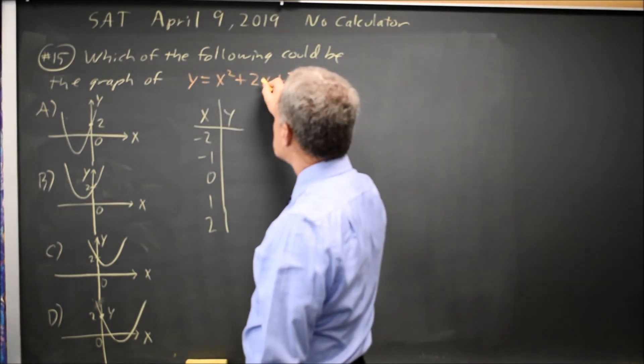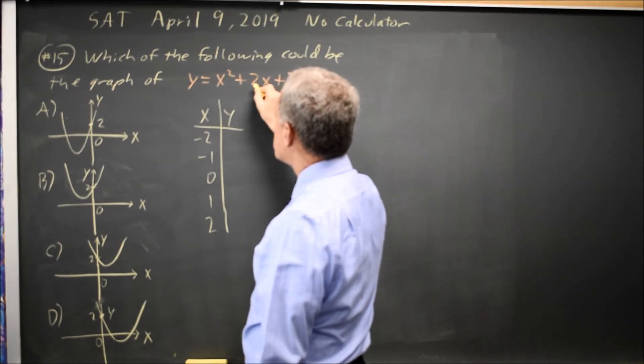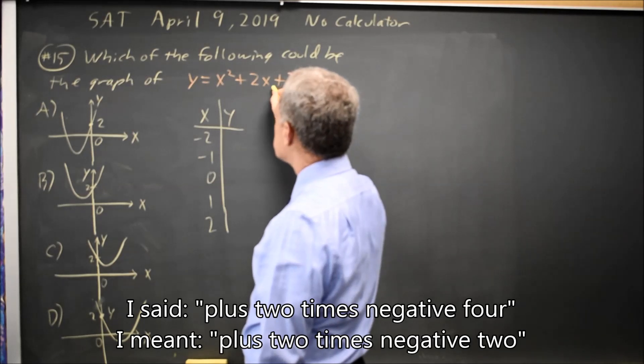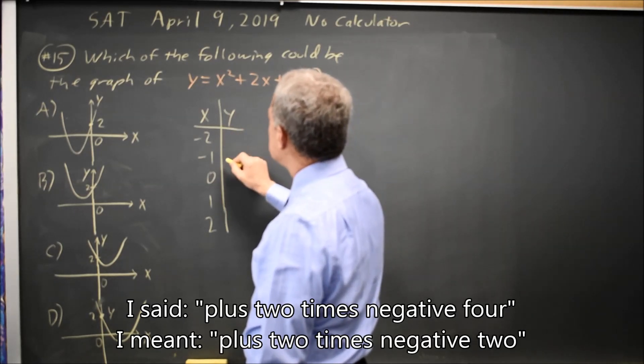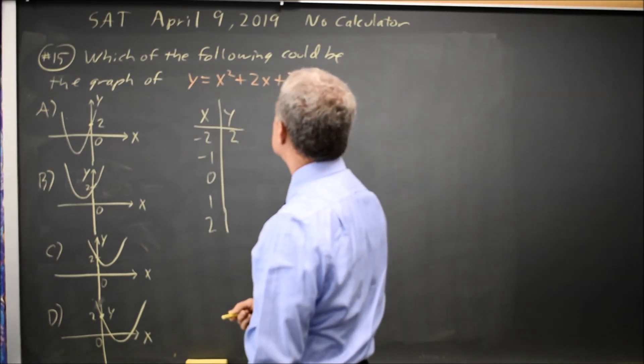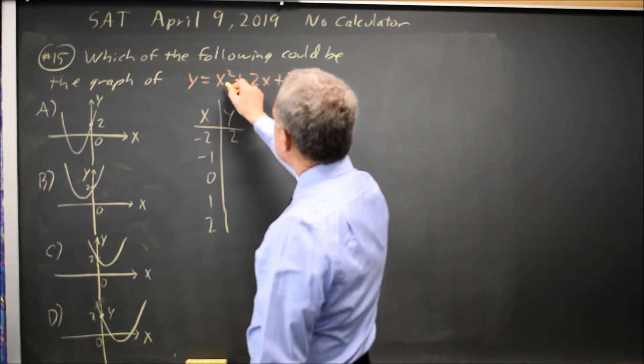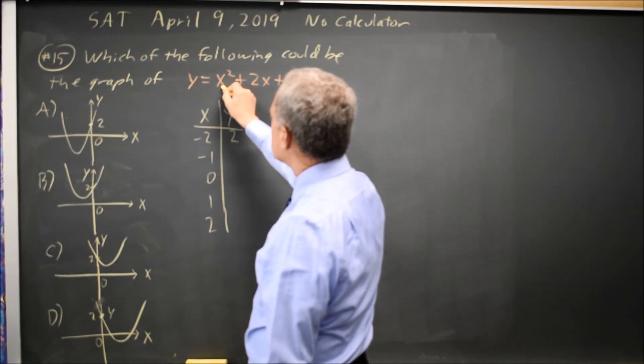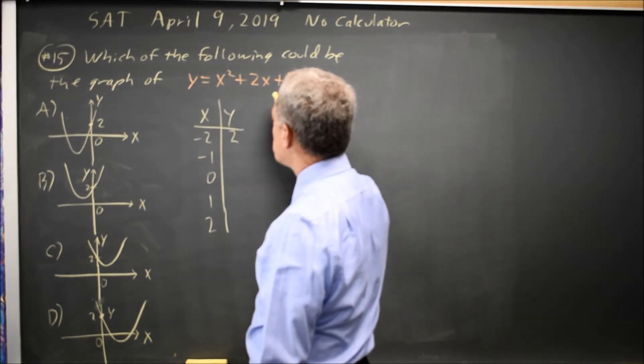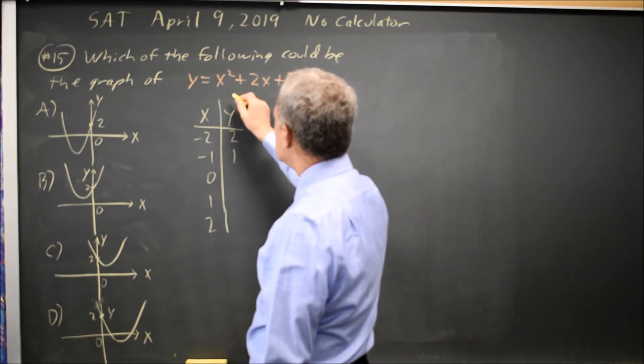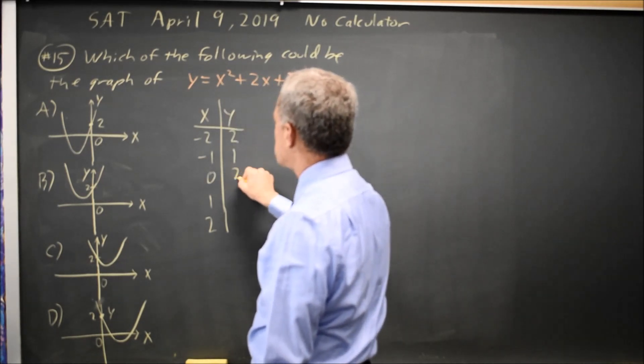So negative 2 squared is 4, plus 2 times negative 2 is negative 4, minus 4 is 0, plus 2 is 2. Negative 1 squared is 1, minus 2 is negative 1, plus 2 is positive 1. 0 plus 0 plus 2 is 2.